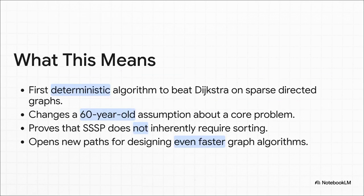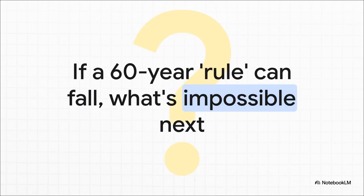So what's the bottom line? Well, first, this is the first deterministic algorithm, meaning it's guaranteed to work, no randomness, to beat Dijkstra on these kinds of networks. Second, it flips a 60-year-old assumption on its head. It proves once and for all that you don't have to sort to find the shortest path. And by proving that old rule wrong, it opens the door for designing all sorts of new, even faster algorithms we haven't even thought of yet. And this is the thought I really want to leave you with. A breakthrough like this isn't just an answer to an old problem. It's a brand new, much bigger question. It shows that even the most established rules of science are really just temporary. It makes you wonder, what other unbreakable barriers are just sitting there, waiting for the right idea to come along and prove they were never really there at all?